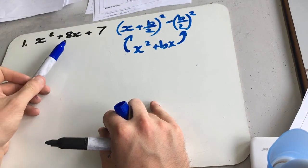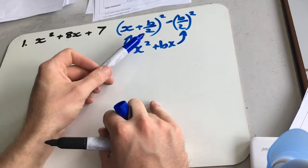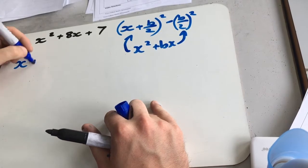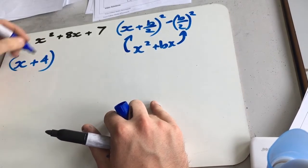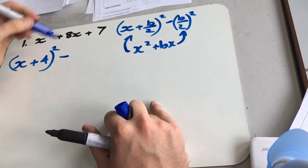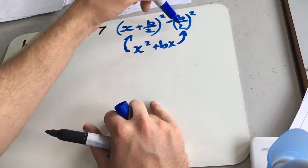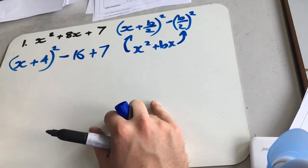So we're going to half the 8, because at the moment 8 is our b, so it has to take this form here. So we're going to get x plus 4 squared minus b over 2 is 4. 4 squared is 16, so minus 16, then plus 7.